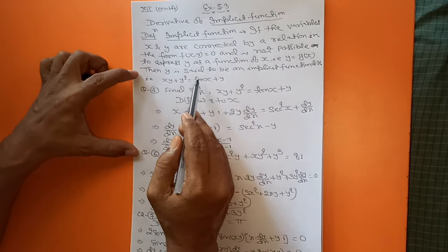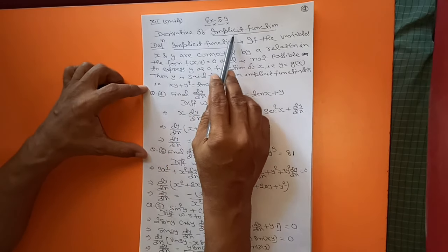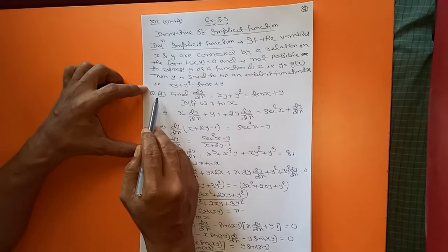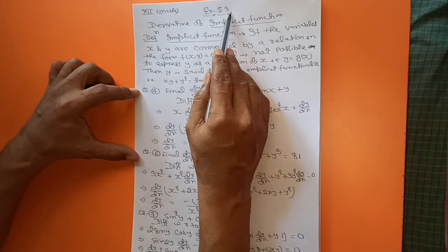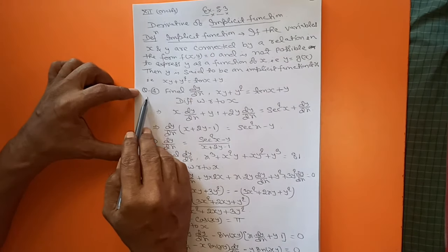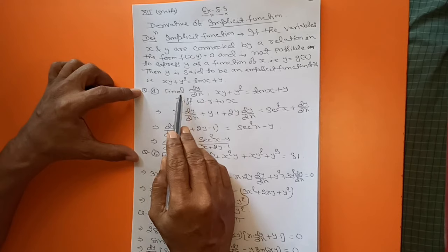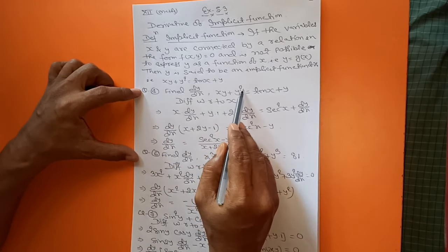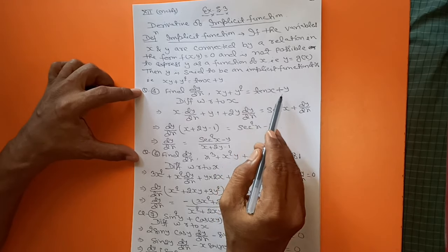Now, how can you differentiate an implicit function? Question number 4 in exercise 5.3: find dy/dx, where the equation is xy + y² = 10x + y.